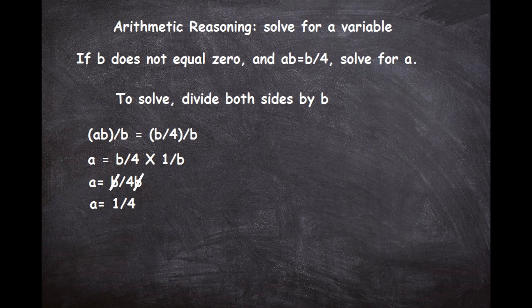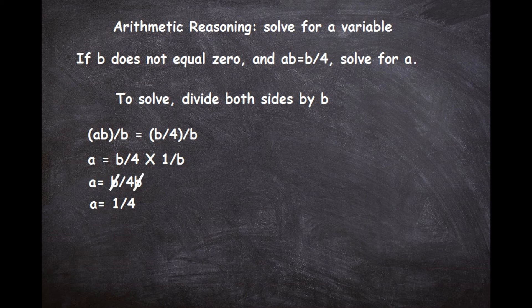Because that b was in the denominator, we wanted to multiply it times 1 over itself to get it where we could multiply the fractions, which ended up with b/4b. And then the b's canceled out because they equal 1 to yield a equals 1/4. And we know b does not equal 0 in this case, and when it doesn't, the a value has to be 1/4.